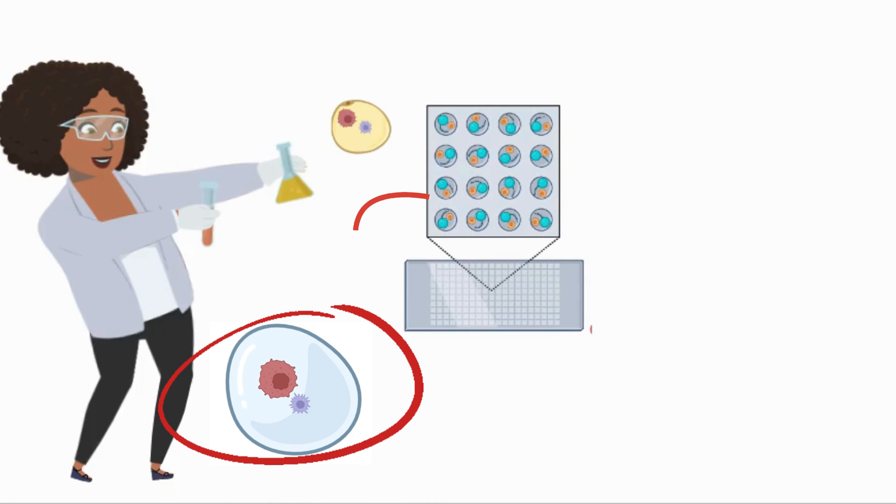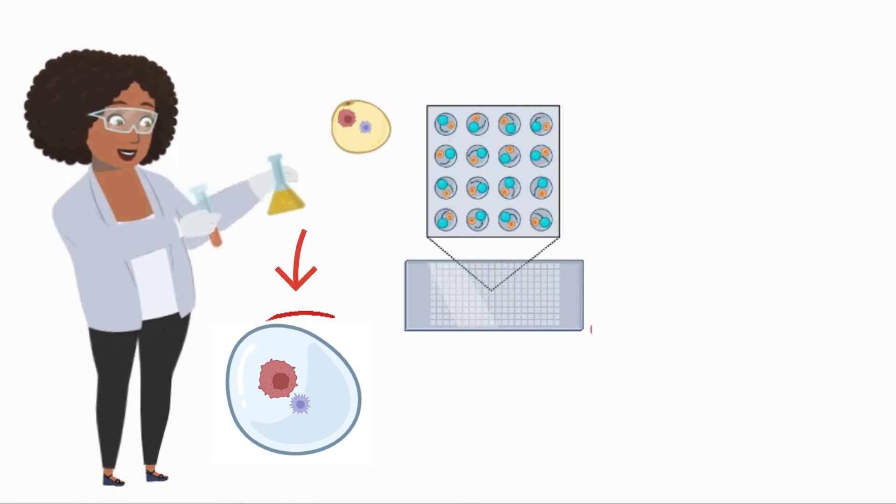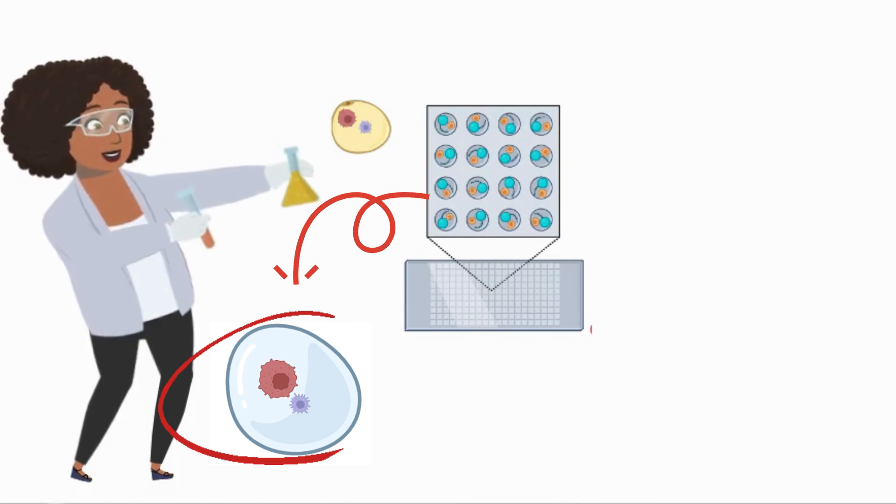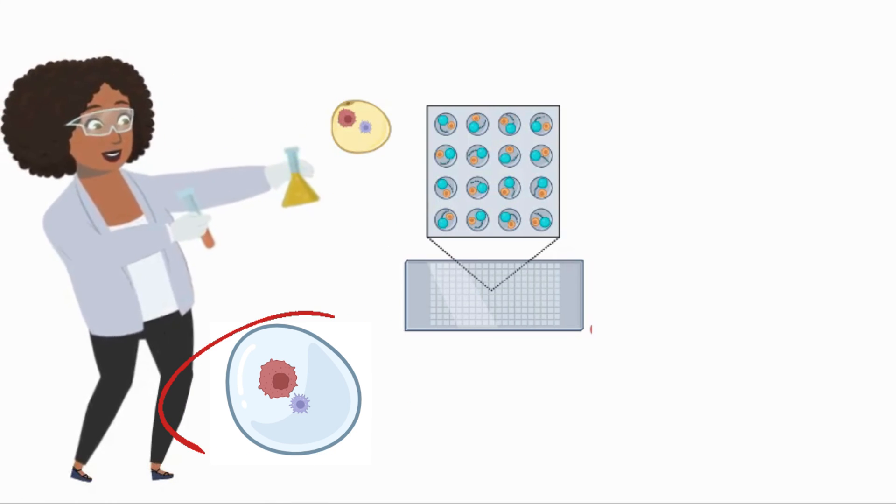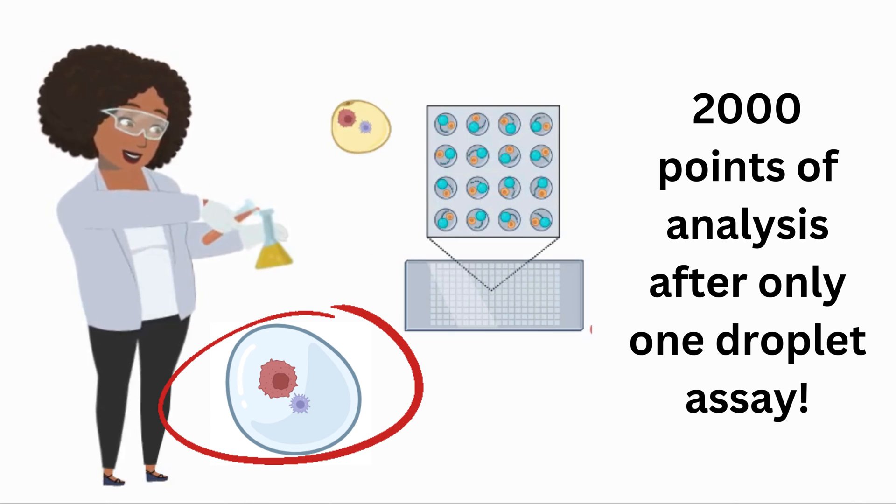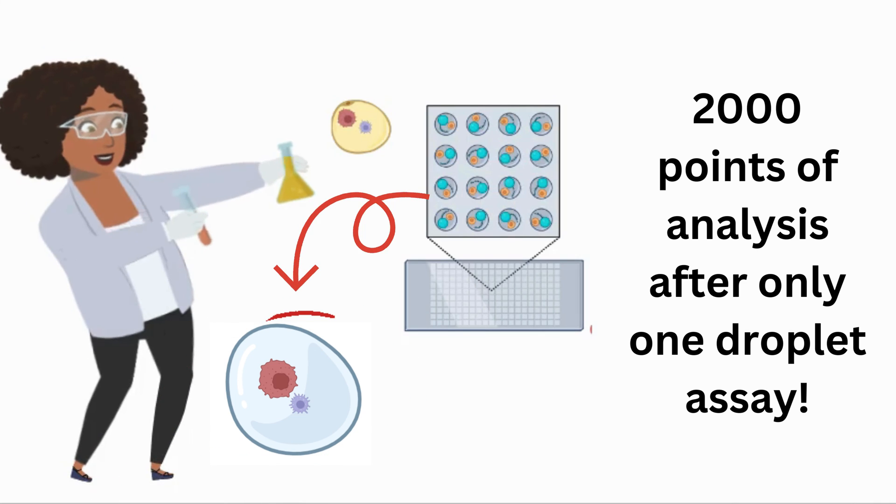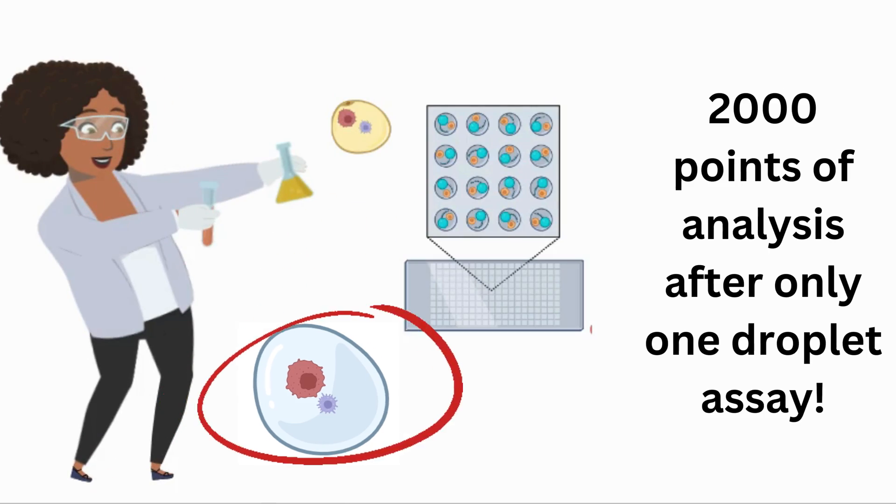Scientists trap these NK cells and cancer cells within these droplets and observe them for hours to test the effectiveness of NK cell-based immunotherapies and other factors. After only one assay, they would have 2,000 points of analysis from the 2,000 droplets that each trapped one NK cell and one cancer cell within them to be observed.